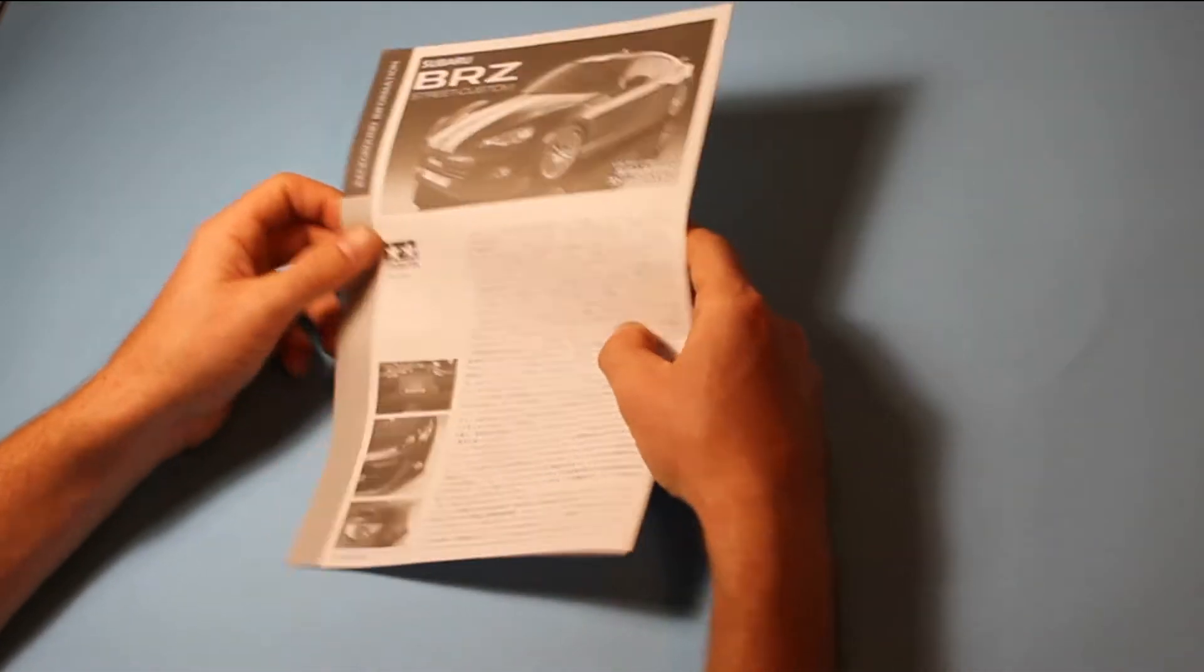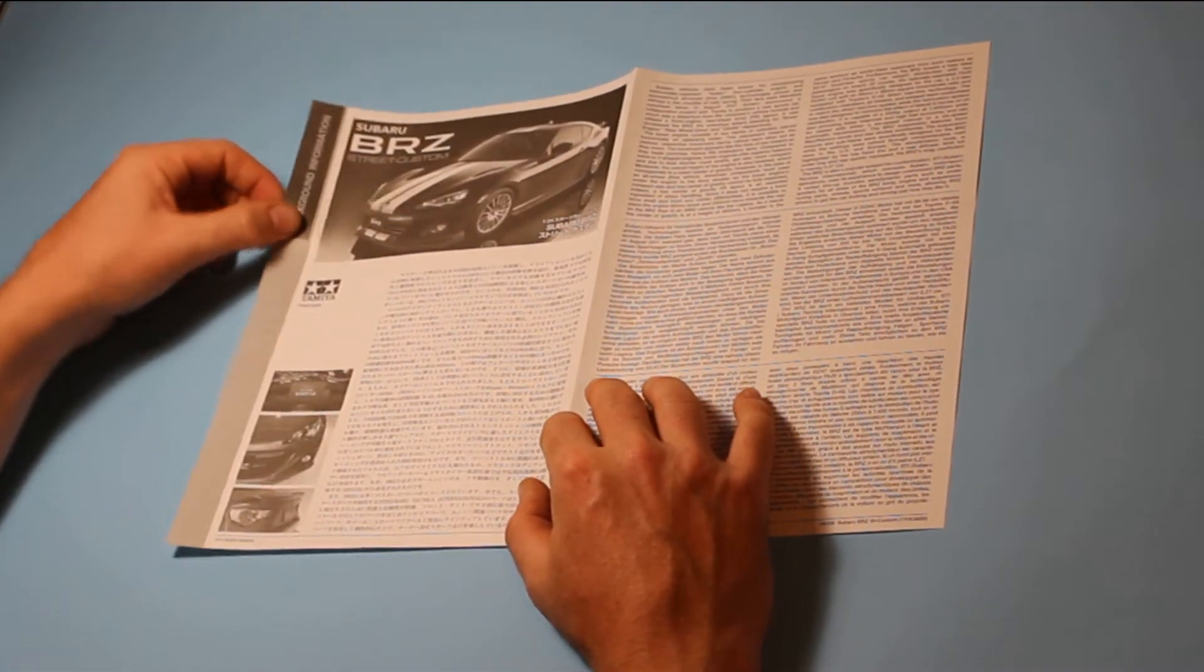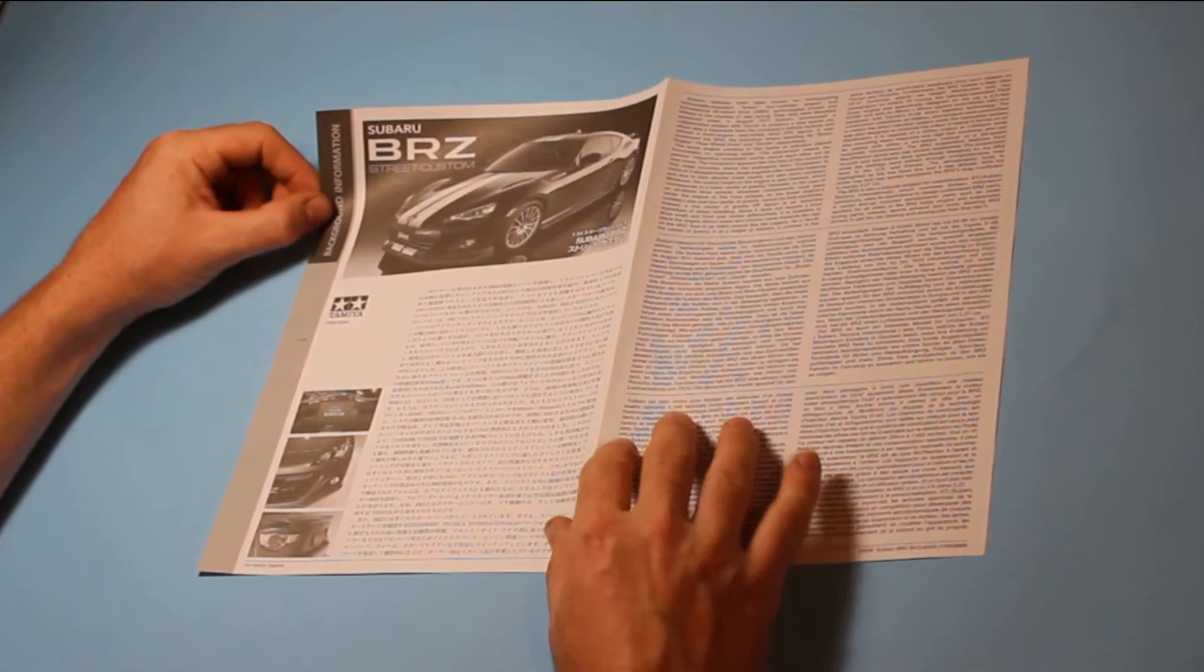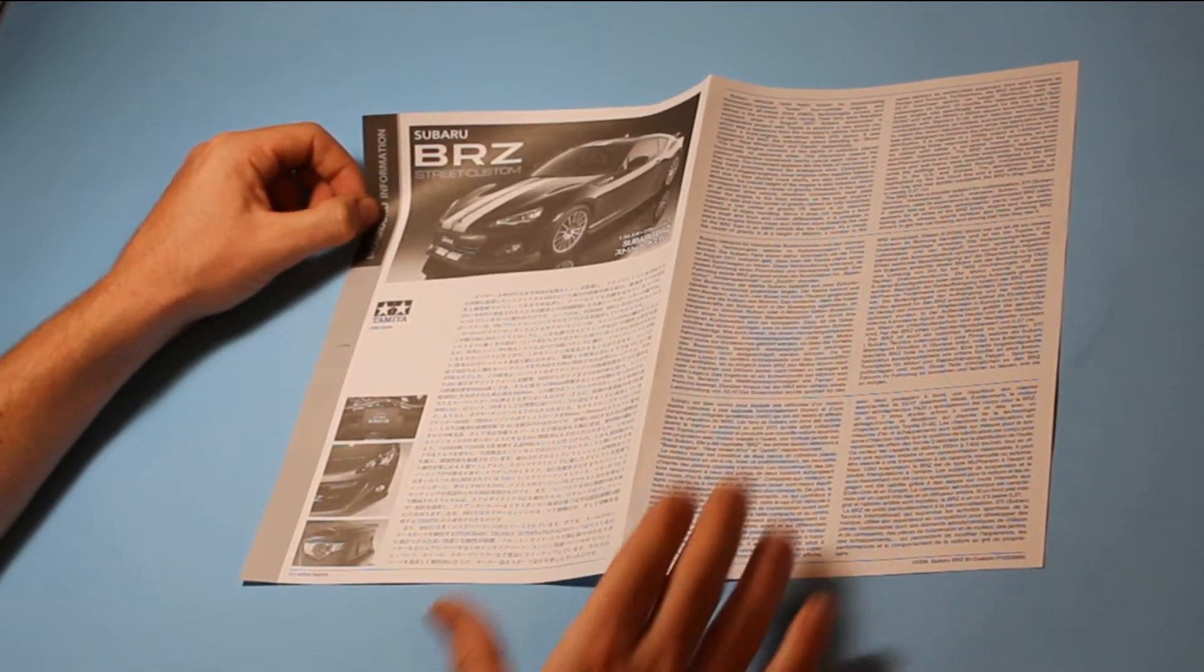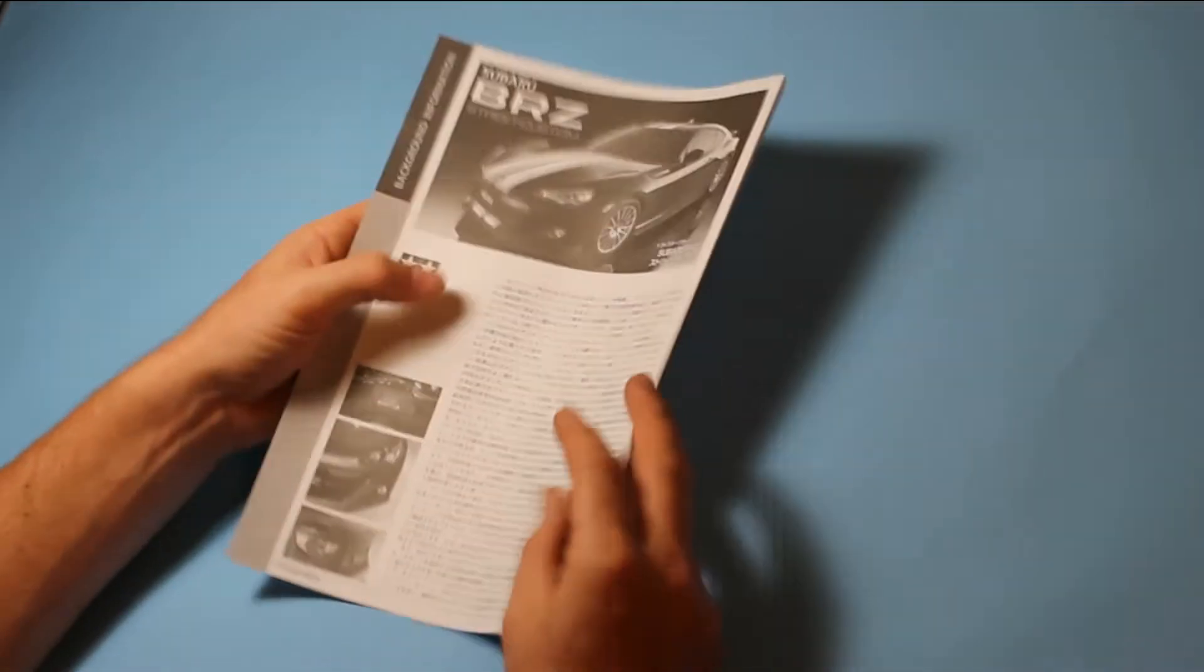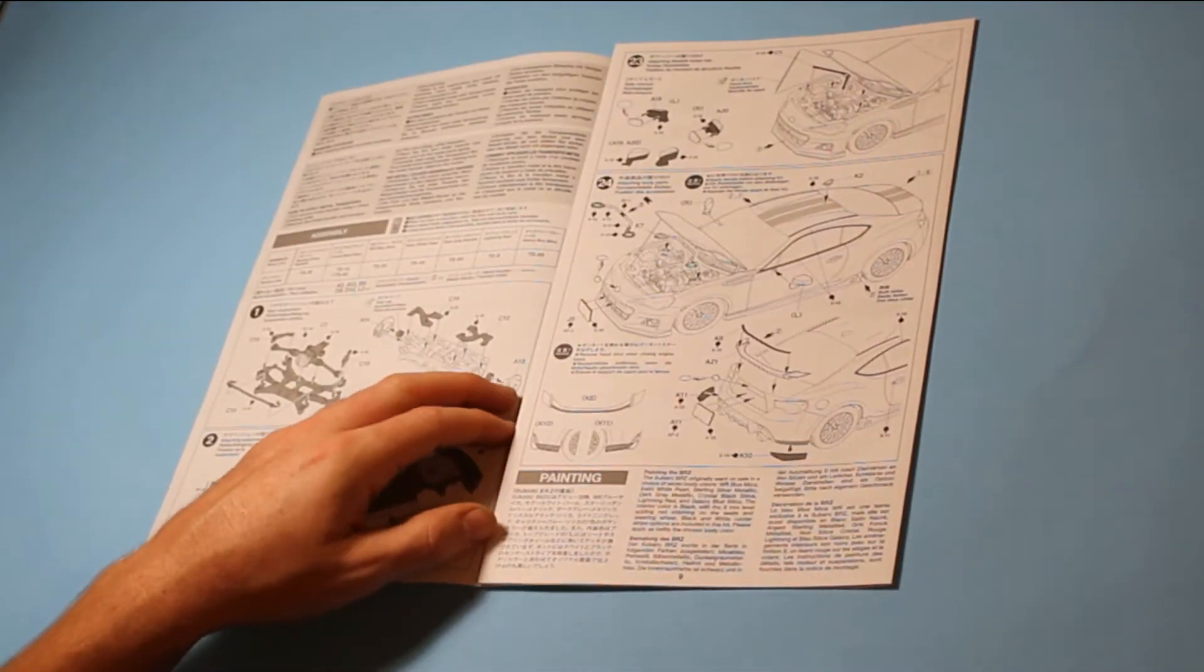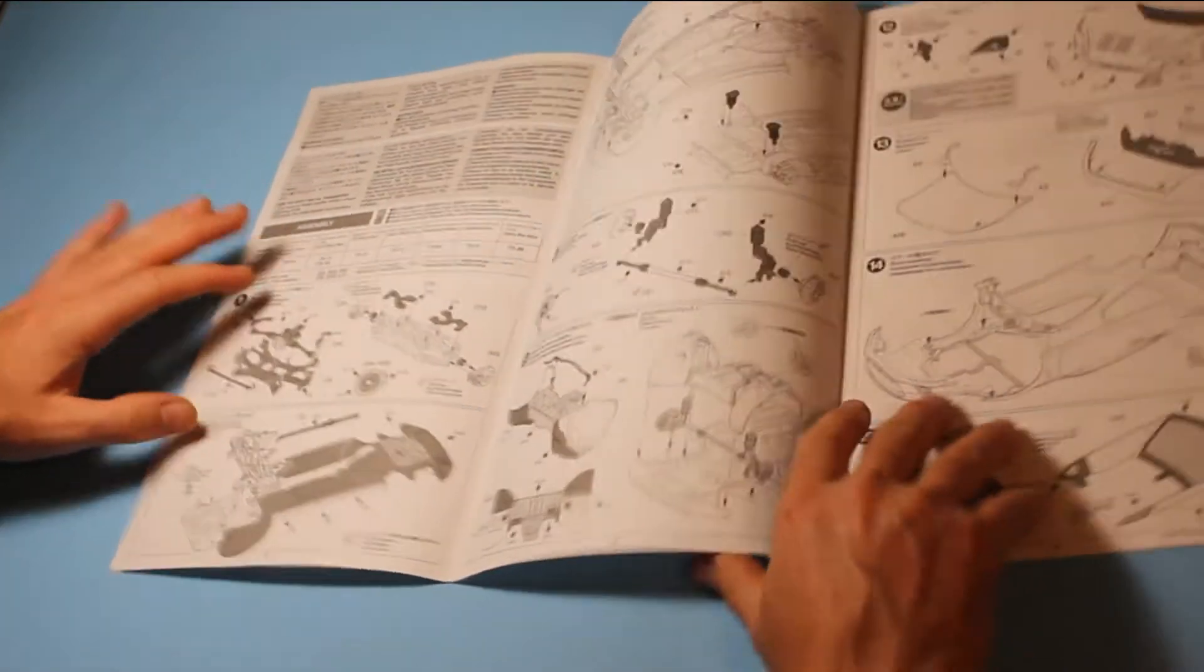Looking through the instructions, you get a background information guide. This must have been around the start of when Tamiya were doing these because it's a bit of a photocopy. In later editions this is more of a glossy manual with quite a lot of detailed pictures, but this one just gives you more or less a write-up as opposed to offering pictures. The instructions are traditional Tamiya with a fold-out layout.